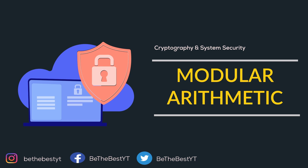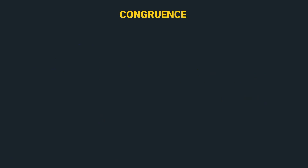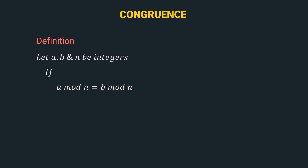The first mathematical concept that we need to understand is congruence. Let's have a look at its definition. So, let a, b and n be integers, and if a mod n is equal to b mod n, then a is congruent to b mod n. Here, this symbol represents the symbol of congruence.